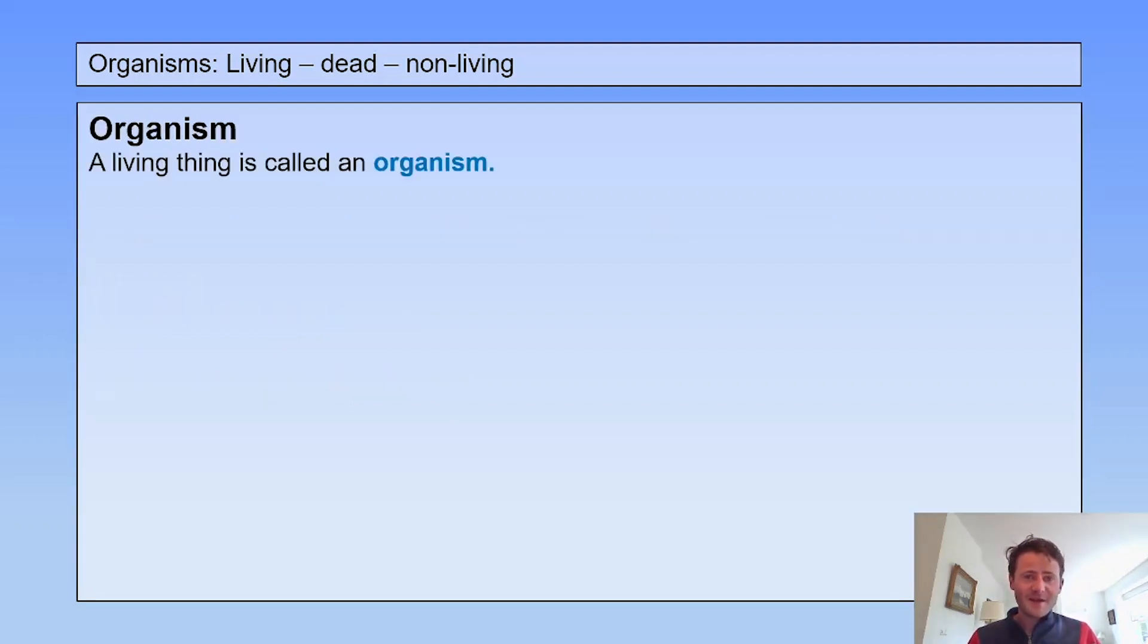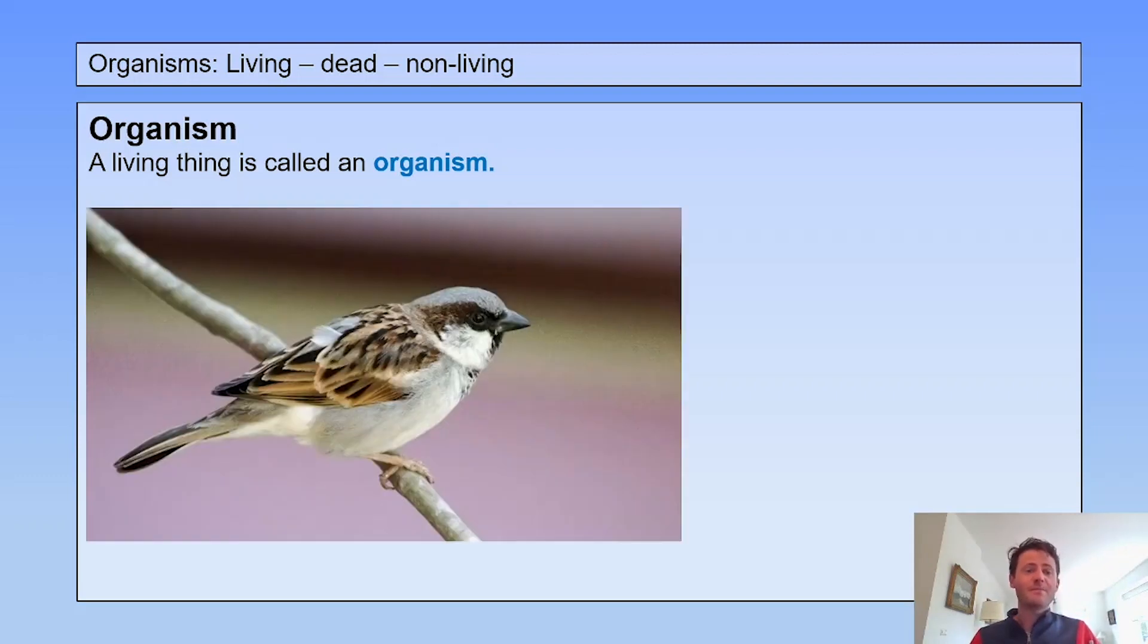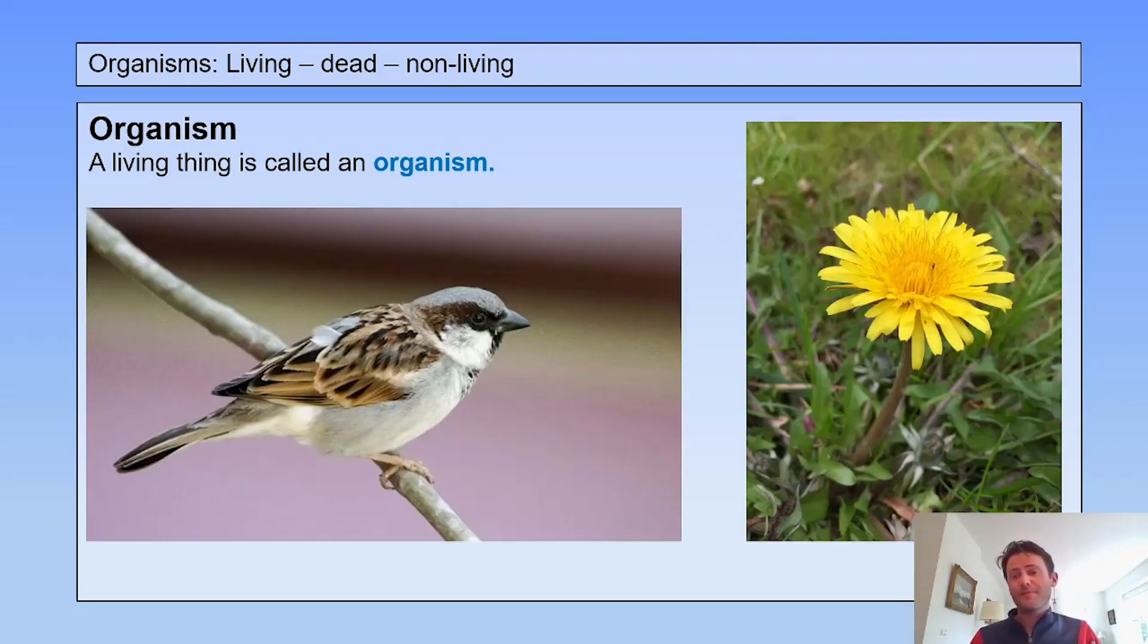A living thing is called an organism. So an organism is a living thing, and a living thing is an organism. And to keep it simple, a bird is an organism, a plant is an organism, you are an organism.